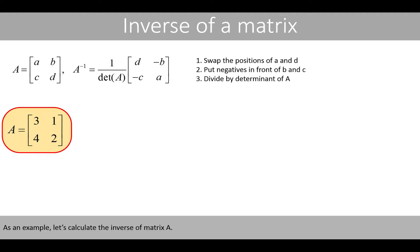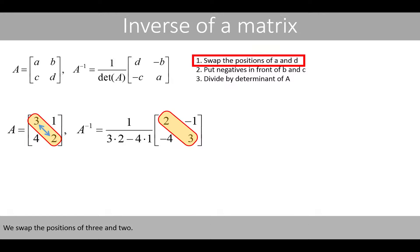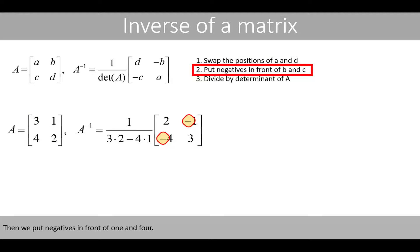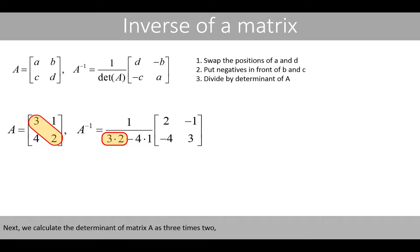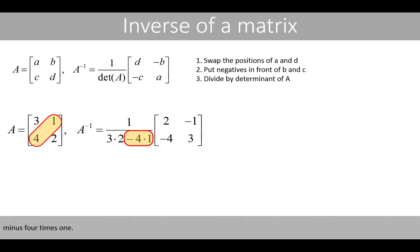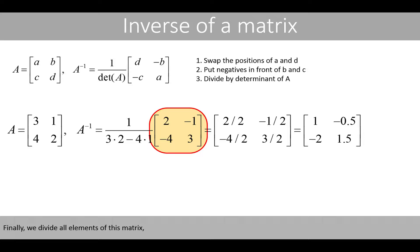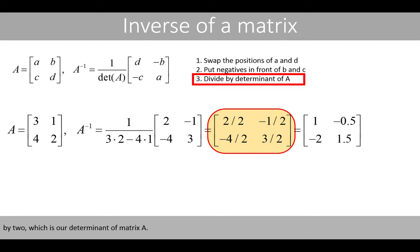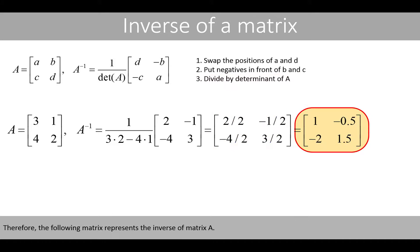As an example let's calculate the inverse of matrix A. We swap the positions of 3 and 2, then we put negatives in front of 1 and 4. Next we calculate the determinant of matrix A as 3 times 2 minus 4 times 1. We see that the determinant of matrix A is 6 minus 4, which is 2. Finally we divide all elements of this matrix by 2, which is our determinant of matrix A. Therefore the following matrix represents the inverse of matrix A.